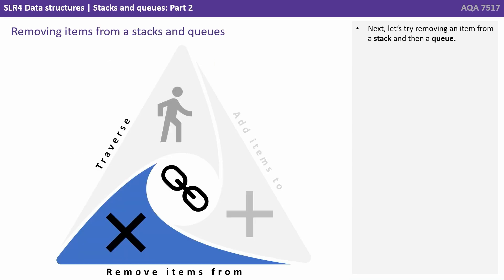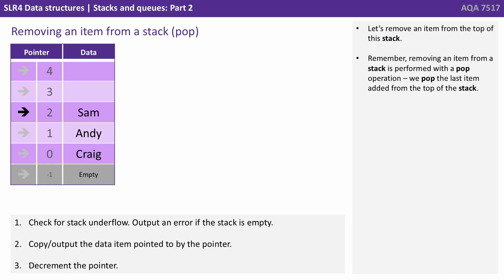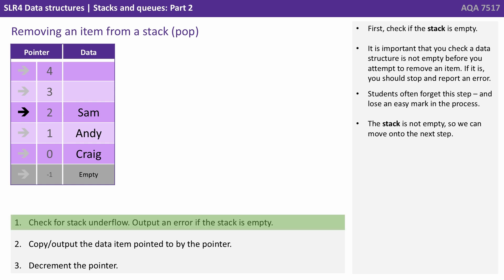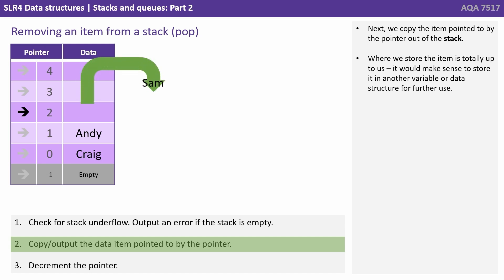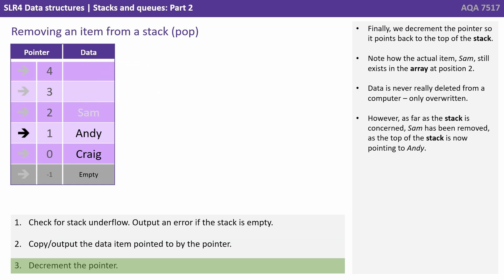Now let's try removing an item from a stack or a queue. Let's start by removing an item from the top of this stack. Remember, removing an item from a stack is performed with a pop operation — we pop the last item added from the top of the stack. First, we check if the stack is empty. It's important you check a data structure is not empty before you attempt to remove an item; if it is, stop and report an error. Again, students often forget this step and lose an easy mark. We can see the stack is not empty, so we copy the item pointed to by the pointer out of the stack. Where we store the item is up to us — it would make sense to store it in another variable or data structure. Finally, we decrement the pointer so it points to the new top of the stack.